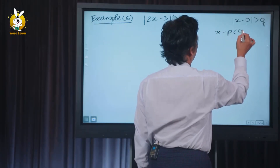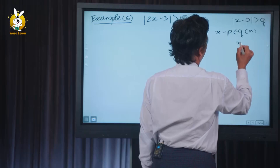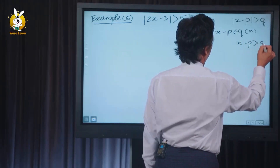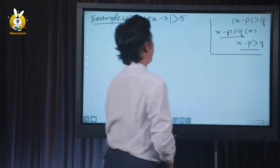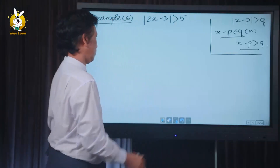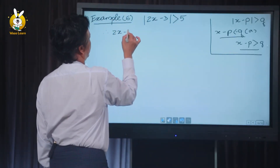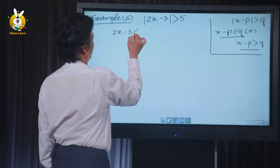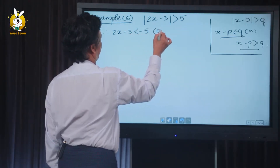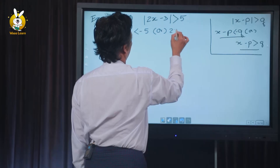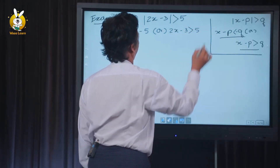Applying the formula: a minus b is less than minus 2, or a minus b is greater than 2. So: 2a minus 3 is less than minus 5, and 2a minus 3 is greater than 5.